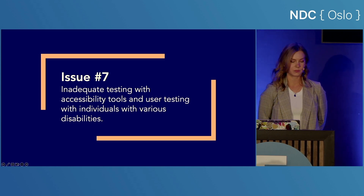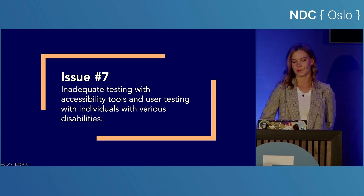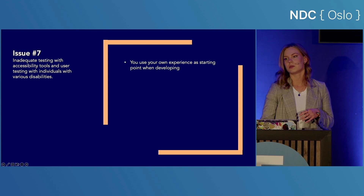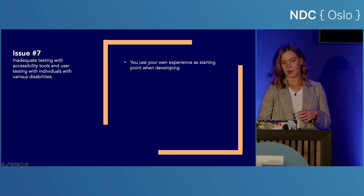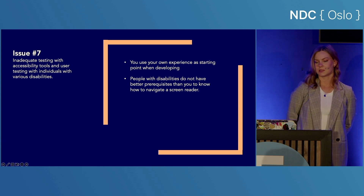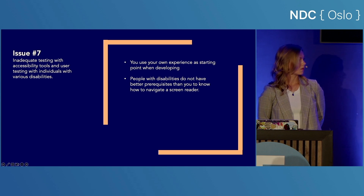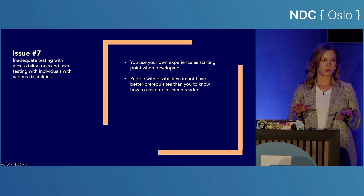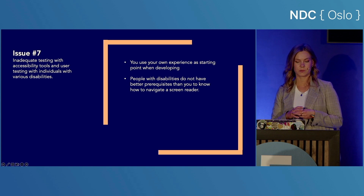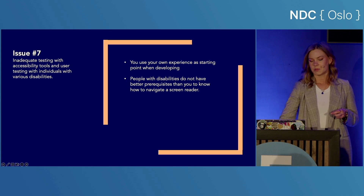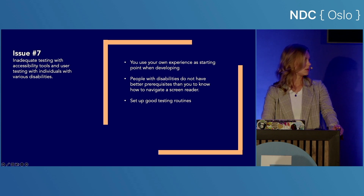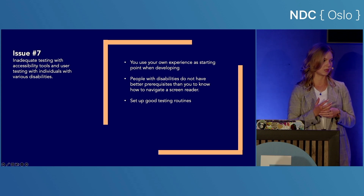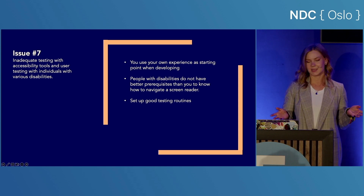And now moving on to some of the more structural issues. Issue number seven: inadequate testing with accessibility tools and user testing with individuals with various disabilities. It's difficult to develop and test for challenges you don't have yourself. You tend to take your own experience as a starting point, and you assume users of screen readers are experts themselves — but they are not. They use screen readers because they have to. A 75-year-old who just started to go blind and has never worked on a computer has no better conditions than you to navigate a screen reader. You need to set up good testing routines. User test on people with disabilities and make sure testing with assistive devices is part of the estimate.